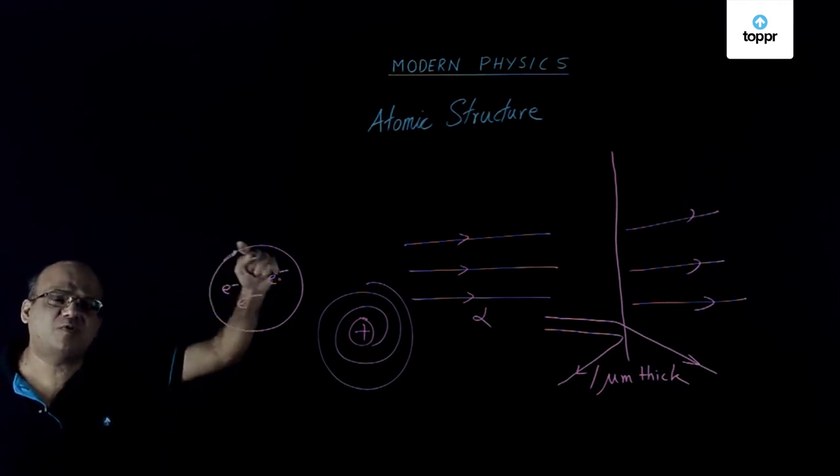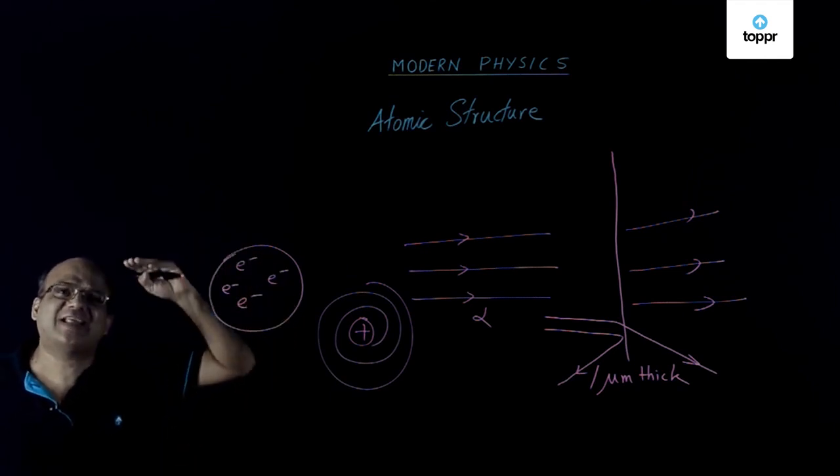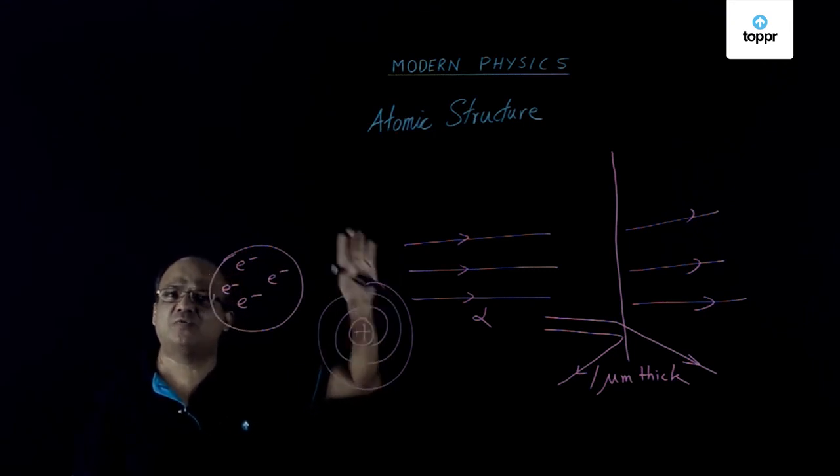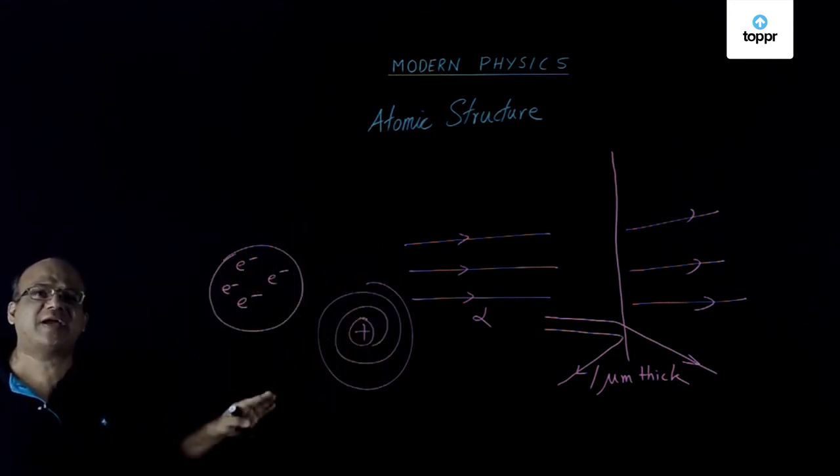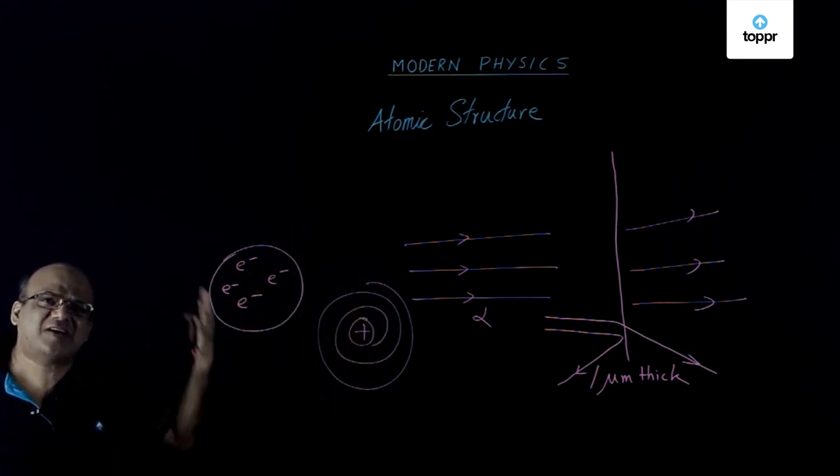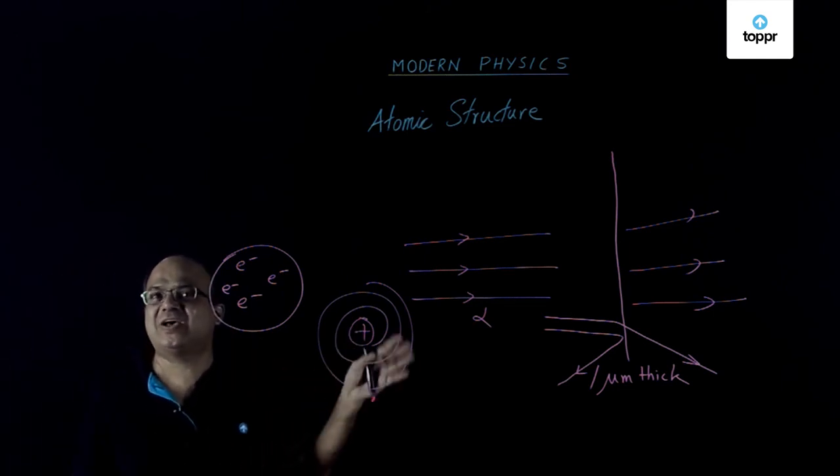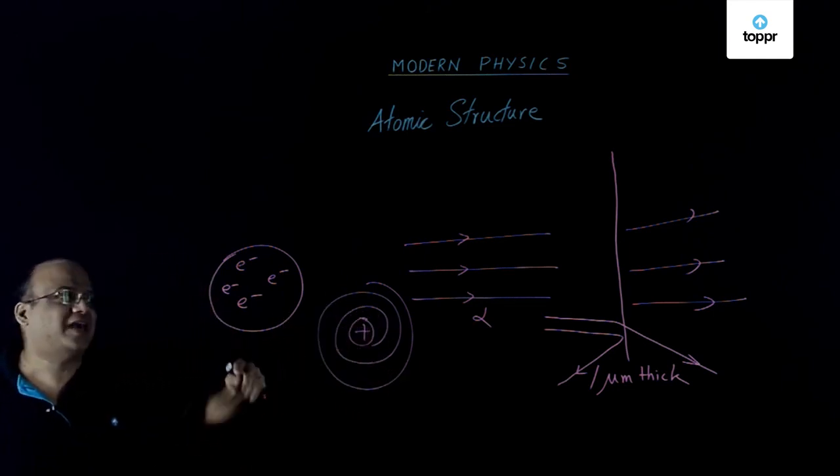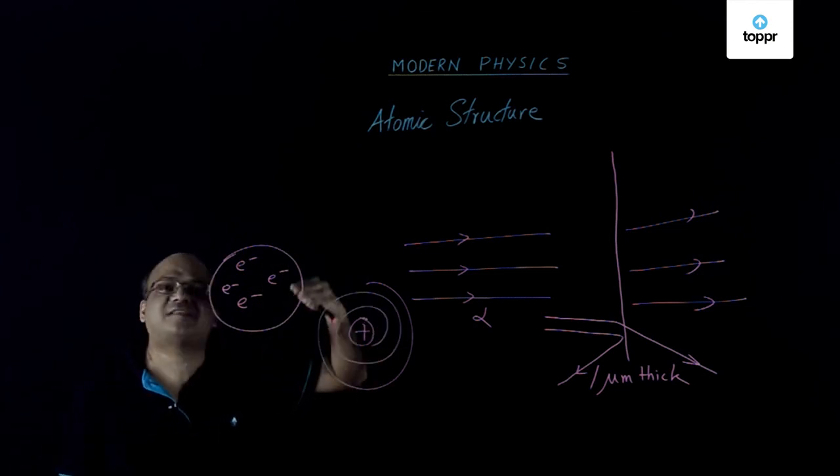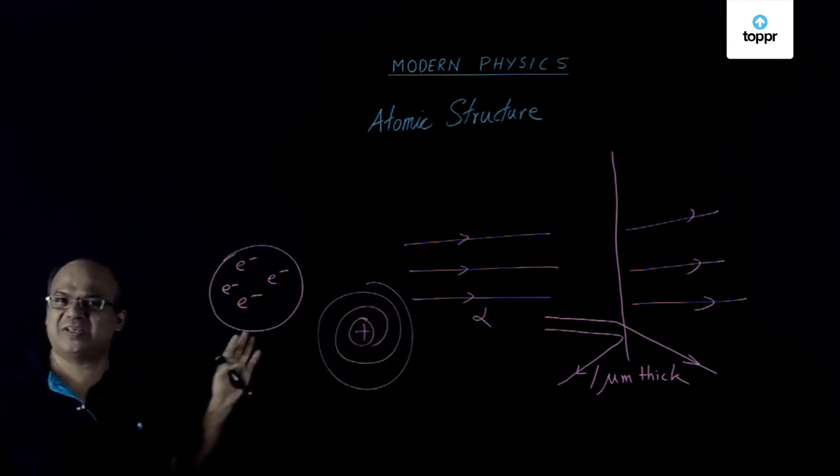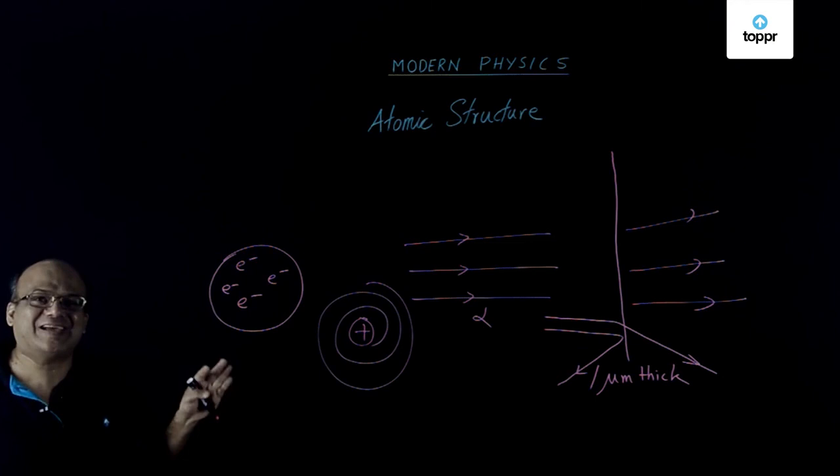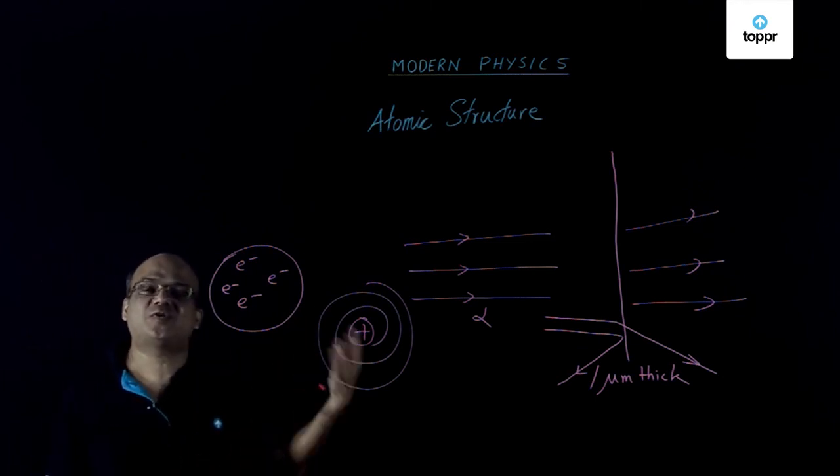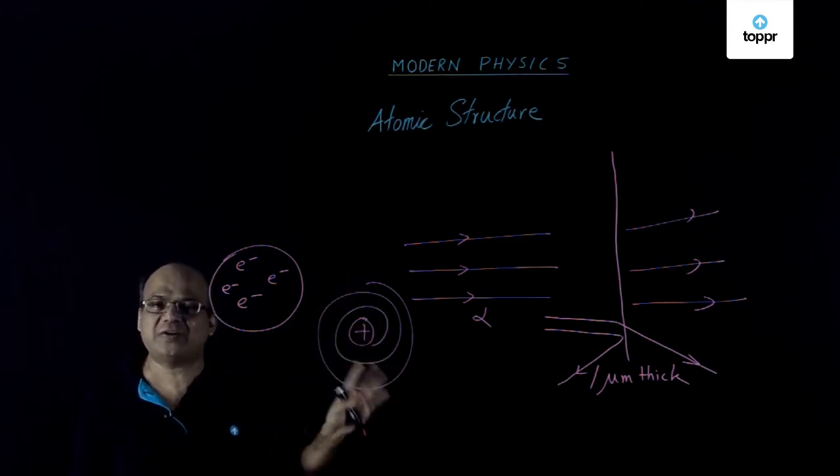First thing, electron moving in a circular orbit is an accelerated charge which according to classical electromagnetic theory must continuously emit radiation and hence lose energy. Therefore, the electron should follow a spiral path and fall into the nucleus. And secondly, this model could not explain the emission spectrum of hydrogen.